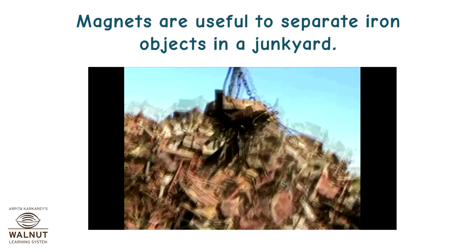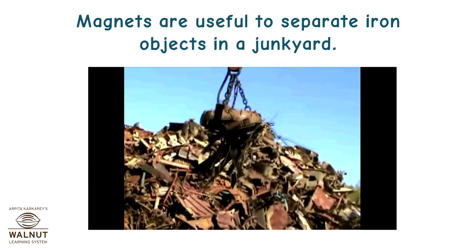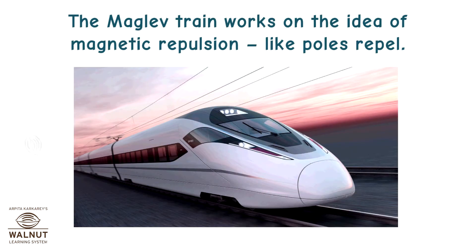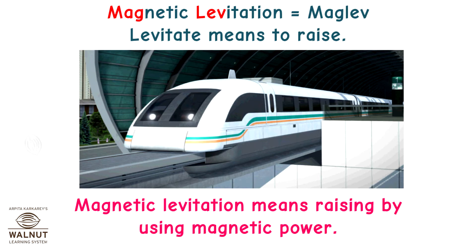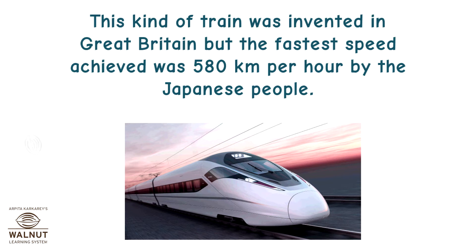Magnets are useful to separate iron objects in a junkyard. The maglev train works on the idea of magnetic repulsion — like poles repel. Magnetic levitation means to raise by using magnetic power. This kind of train was invented in Great Britain, but the fastest speed achieved was 580 km per hour by the Japanese.